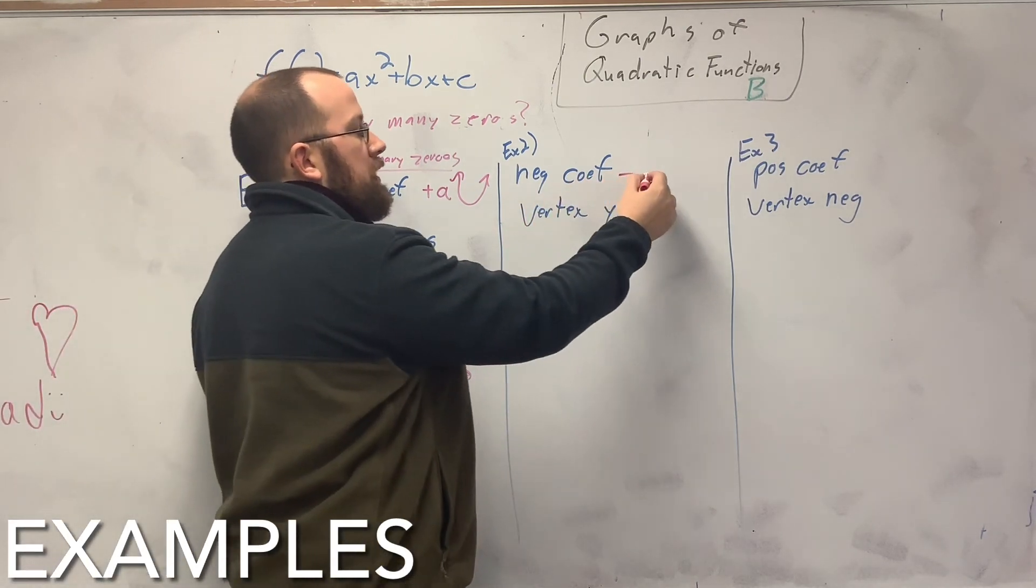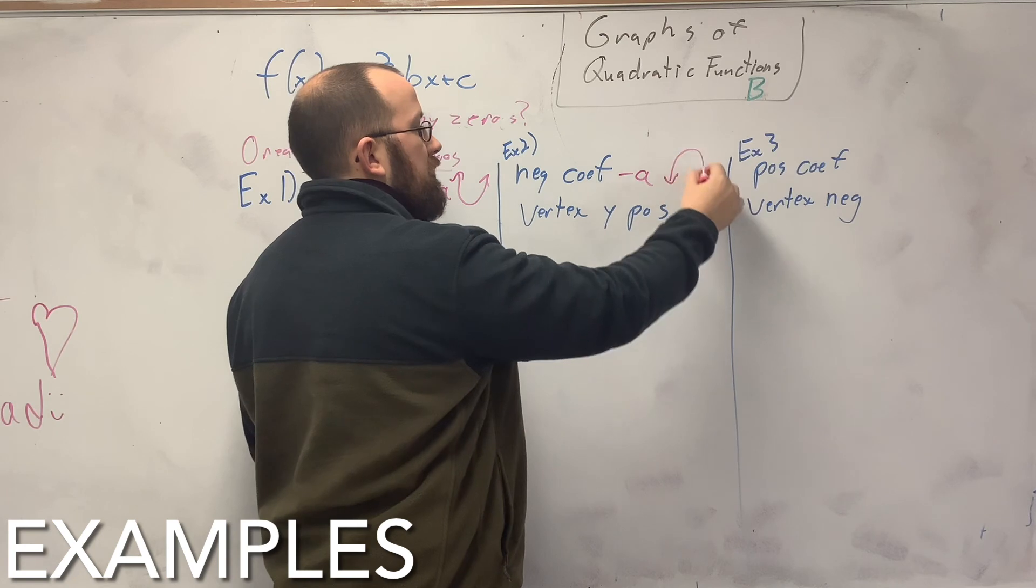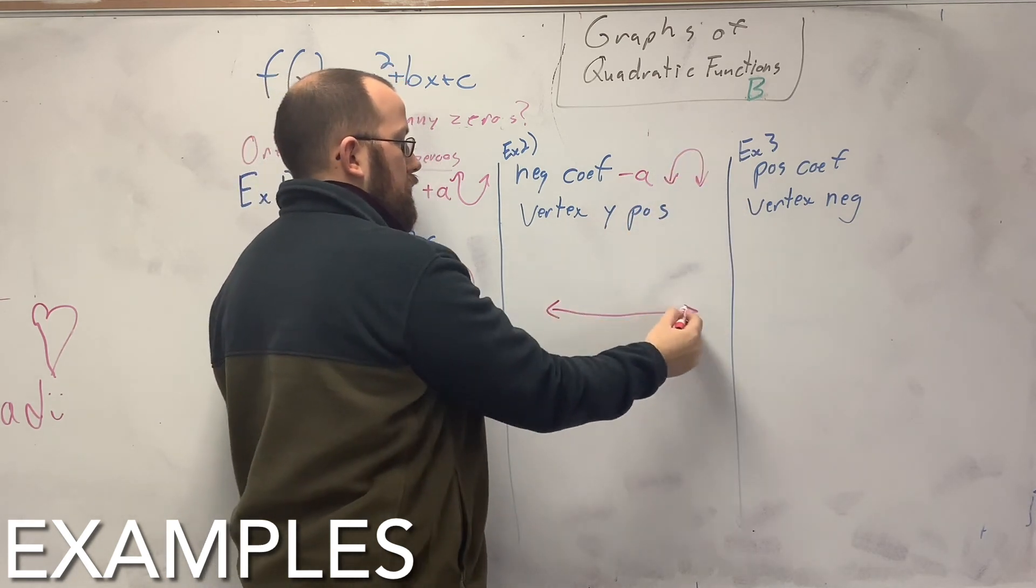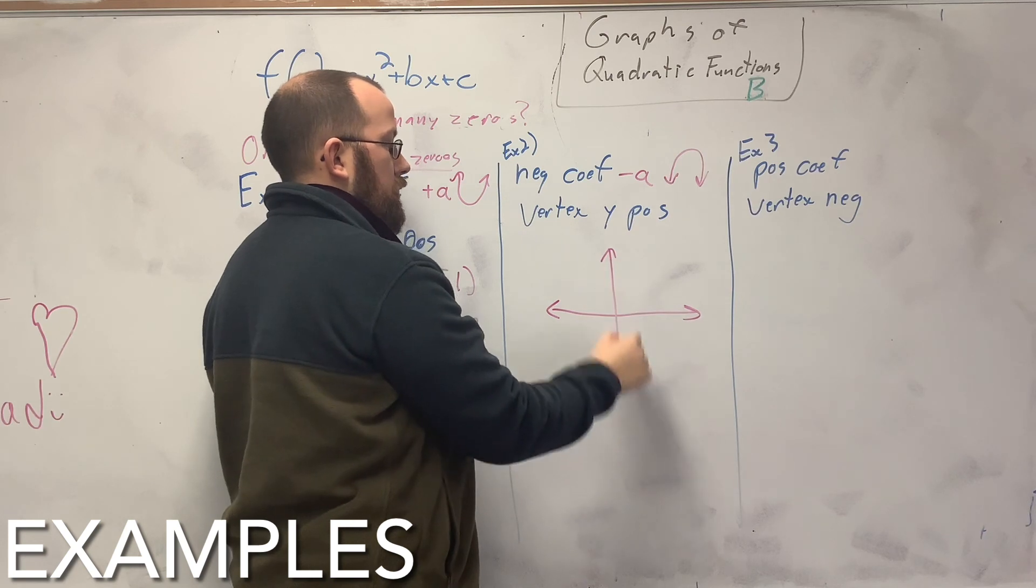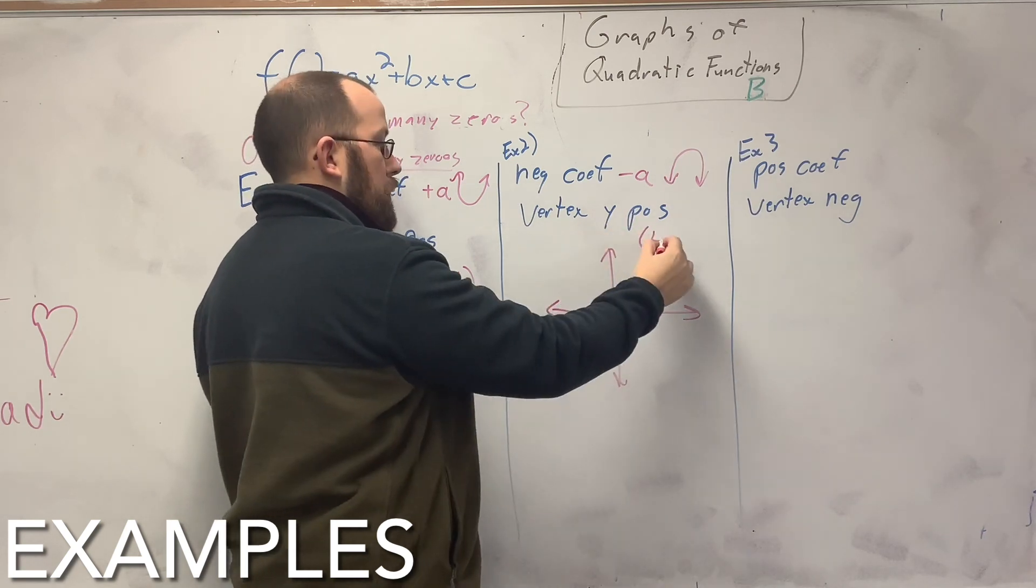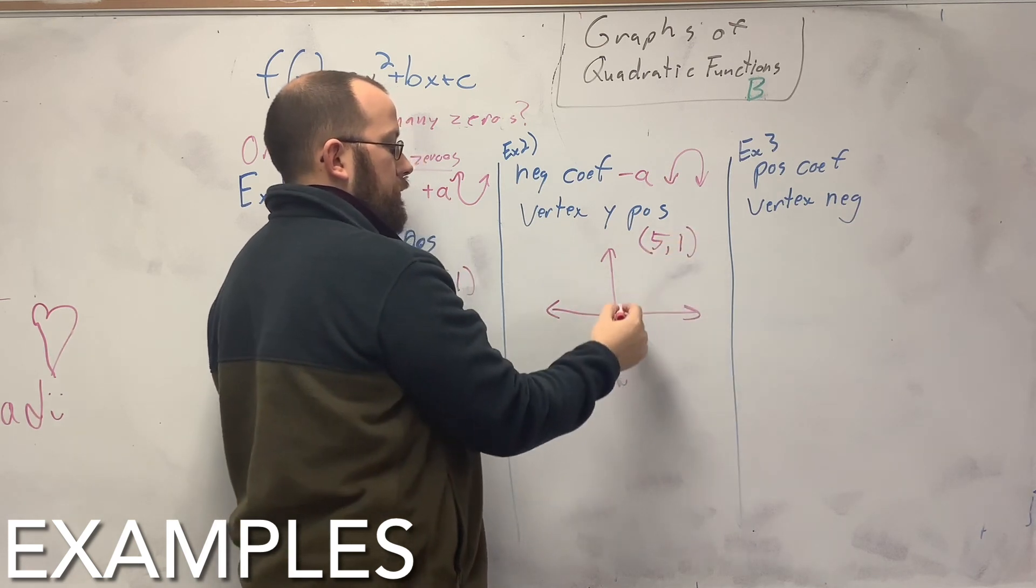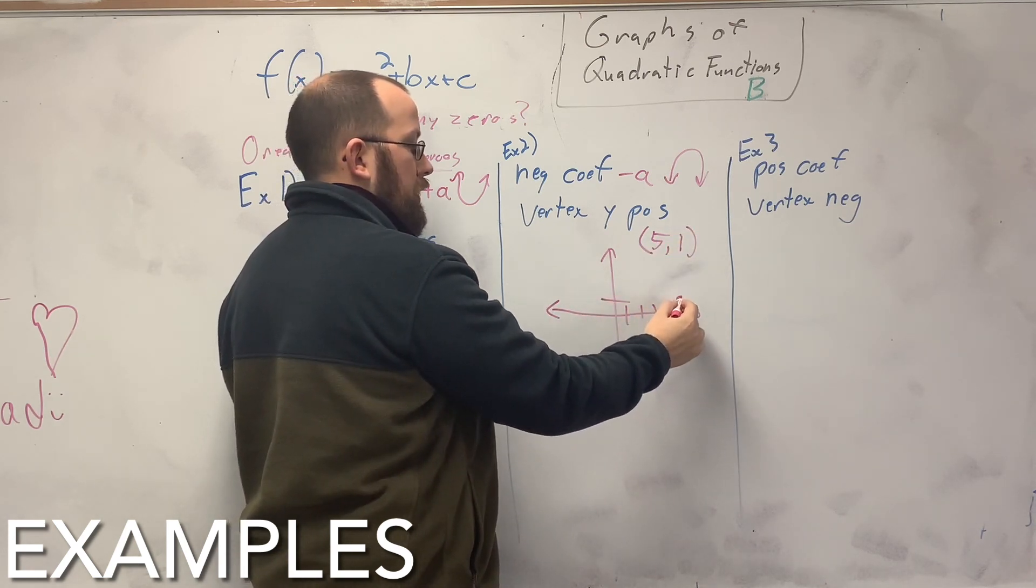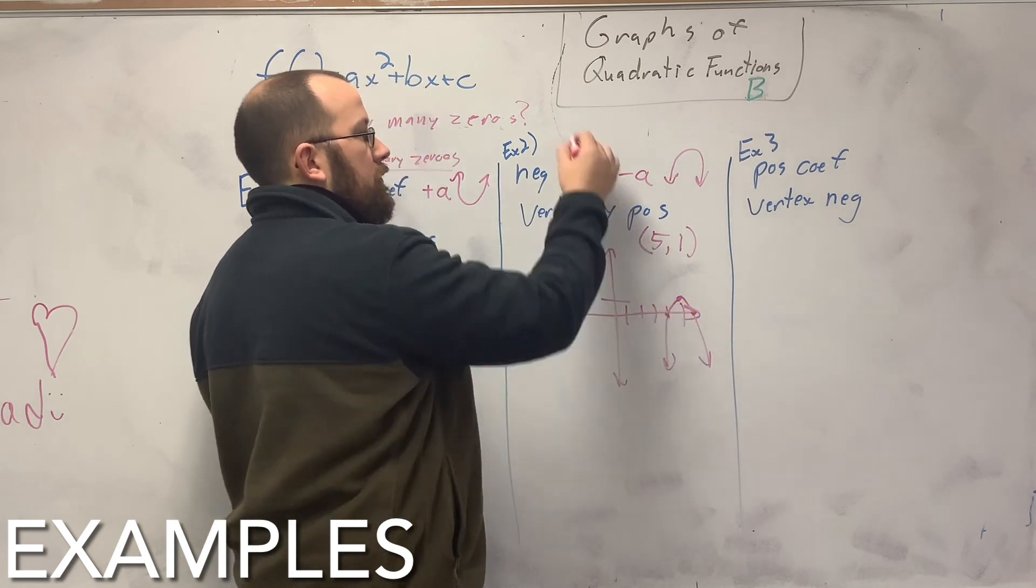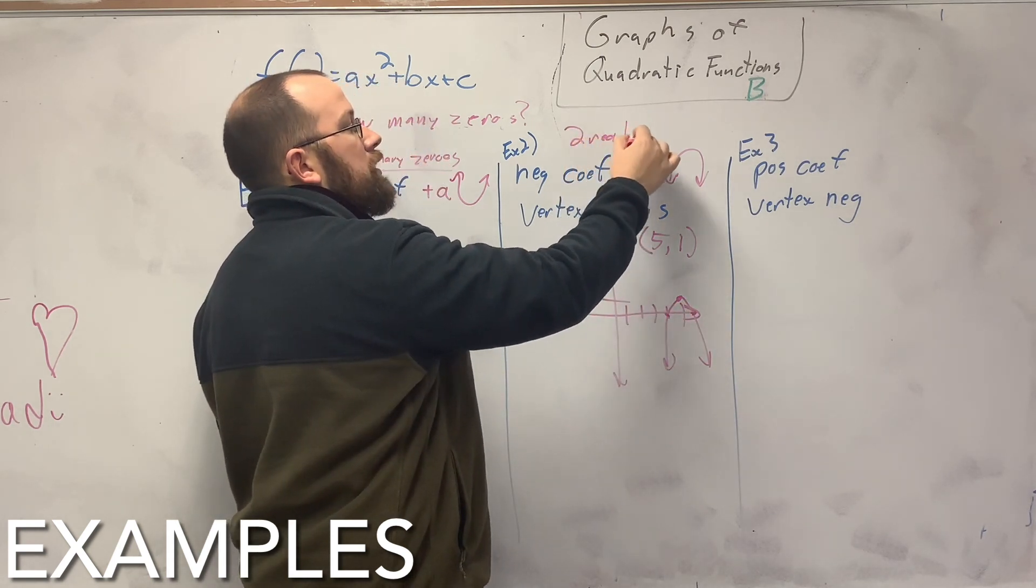Negative coefficient. So that means I have a negative A up front, which gives me a frowny face. The vertex y is positive. So we'll just stick with (5, 1). Here. And it's a frowny face. So how many times do I go to the x-axis? Two. I have two real zeros here.